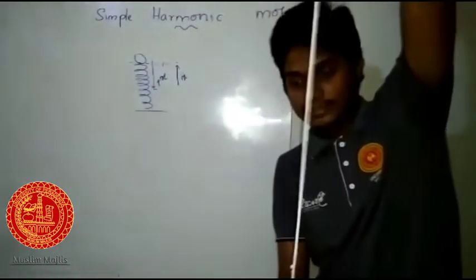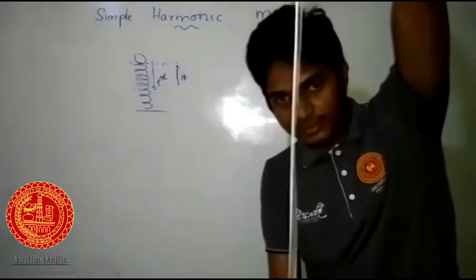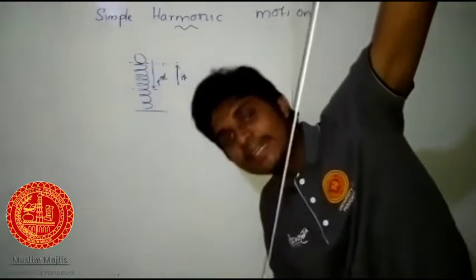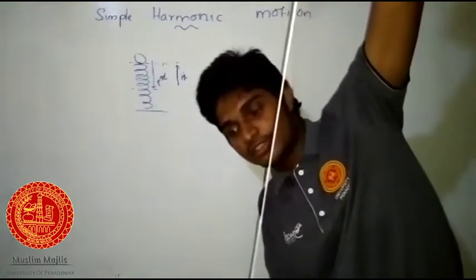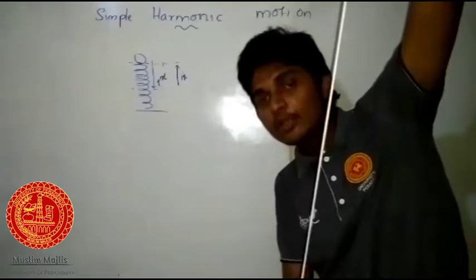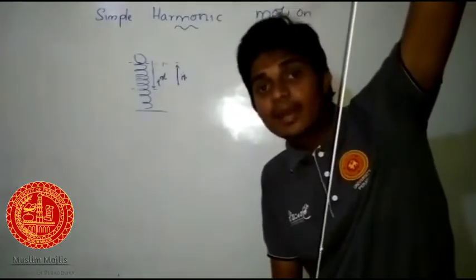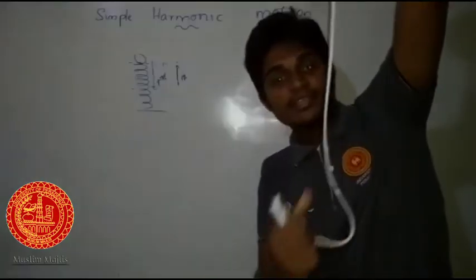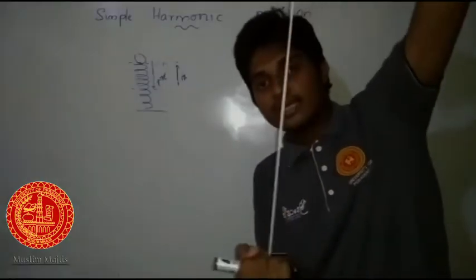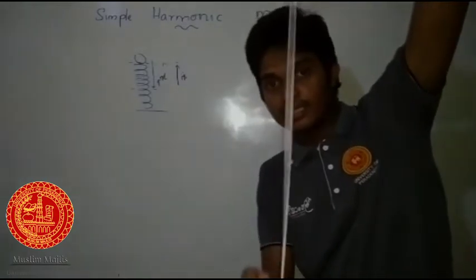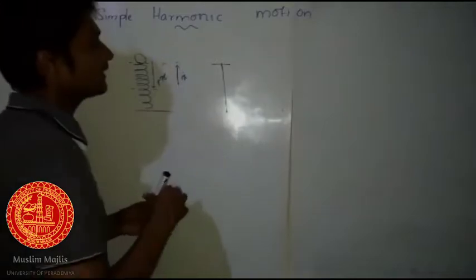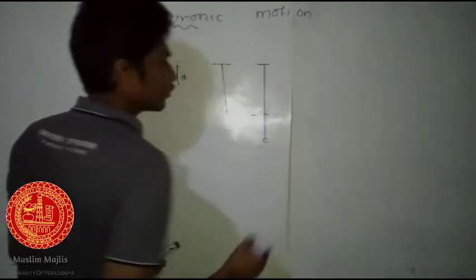If I further pull the mass down and release it, it's going to oscillate like that — that will be the motion. If the spring is fully extended and I extend it further and release it, there's going to be a jerk and the motion will continue up and down. If there is no air resistance, this motion continues; because of air resistance, it eventually stops.